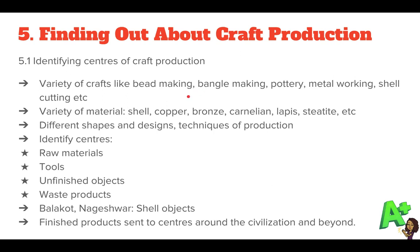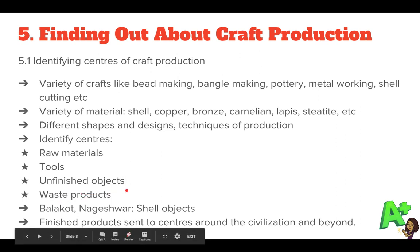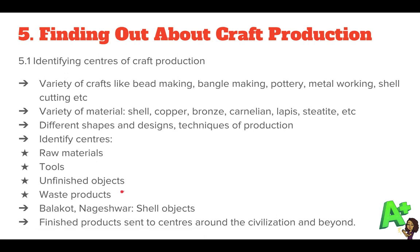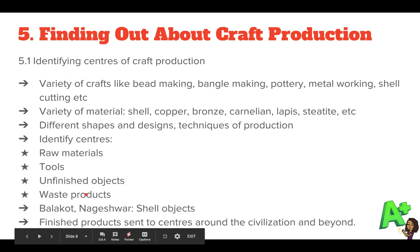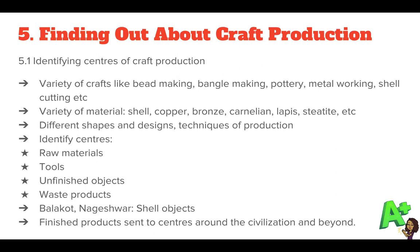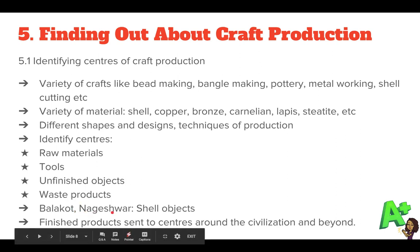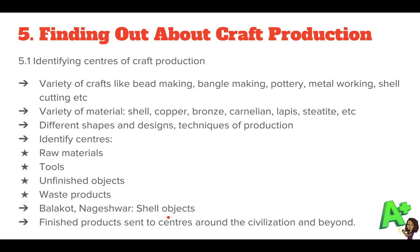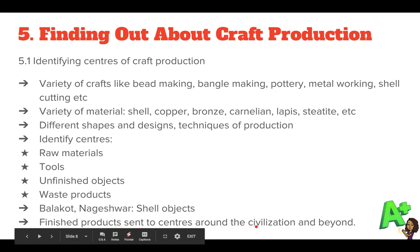How do we identify centers of craft production? We look for raw materials, remains of tools, unfinished objects, and waste products. For example, if shell bangles were made in a place, the carved-away shell waste would accumulate there. In Balakot and Nageshwar, large quantities of shell objects have been found, leading us to assume these were centers of shell craft industries. Finished products were then sent to centers around the civilization and beyond.